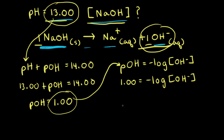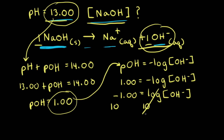To solve for the concentration of hydroxide ions in solution, first we move the negative sign to the left side, which gives us negative 1.00 is equal to the log of the concentration of hydroxide ions. To get rid of the log, we take 10 to both sides. So the concentration of hydroxide ions is equal to 10 to the negative 1.00.